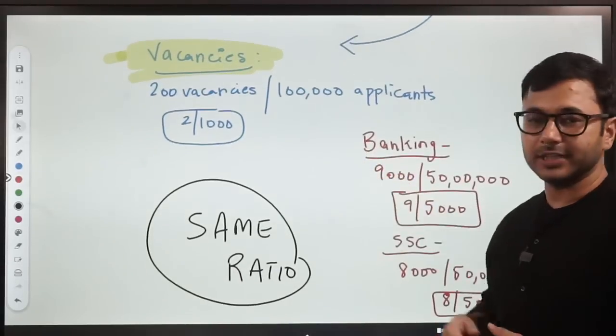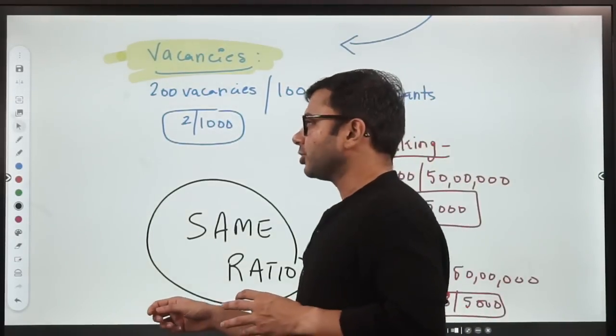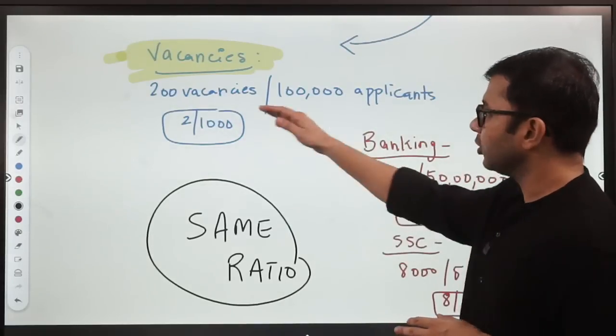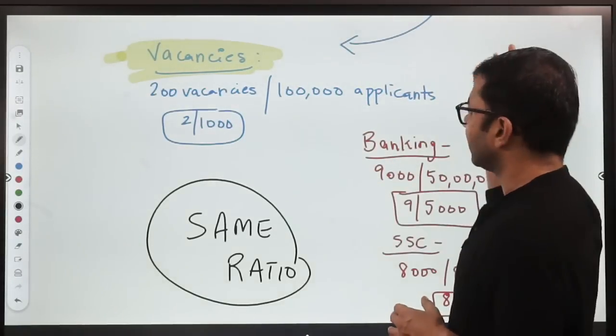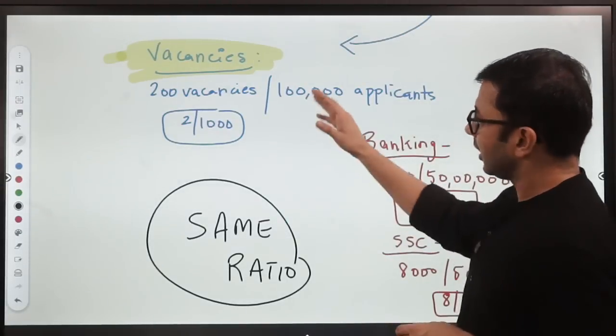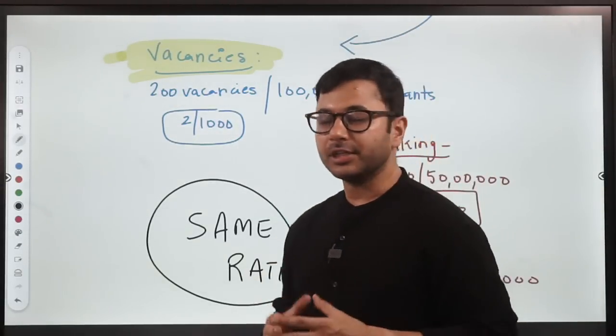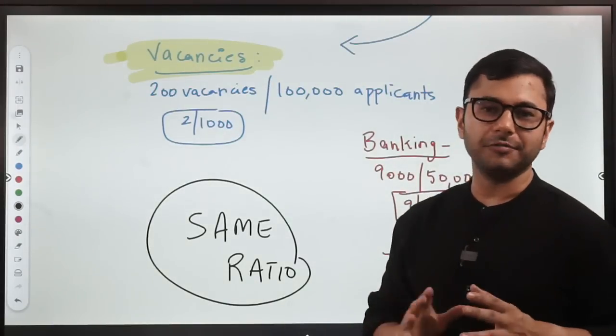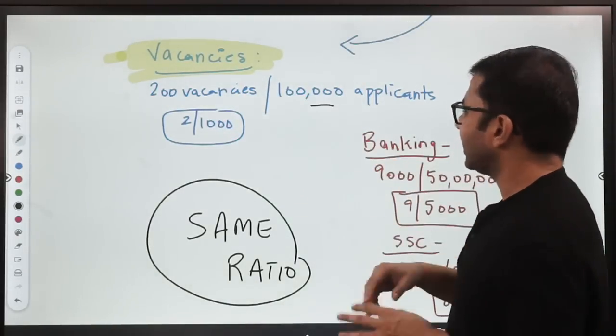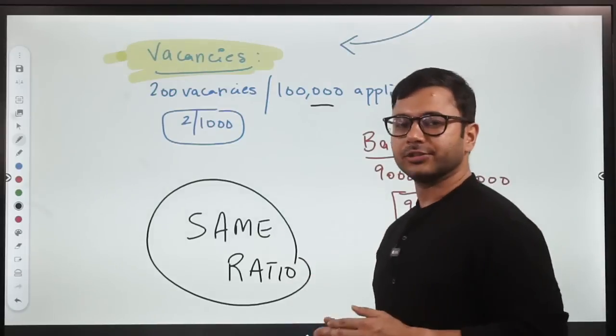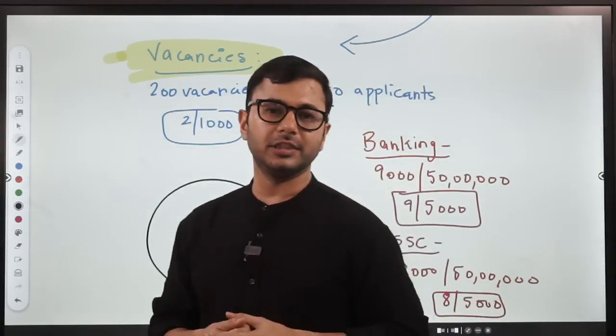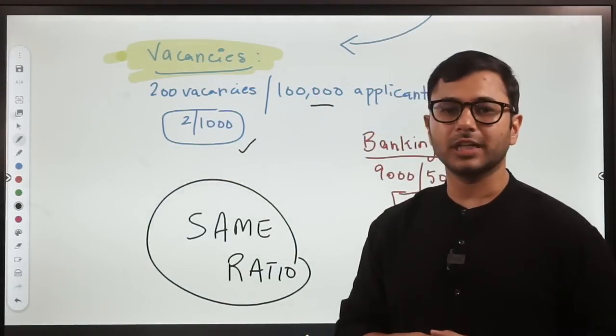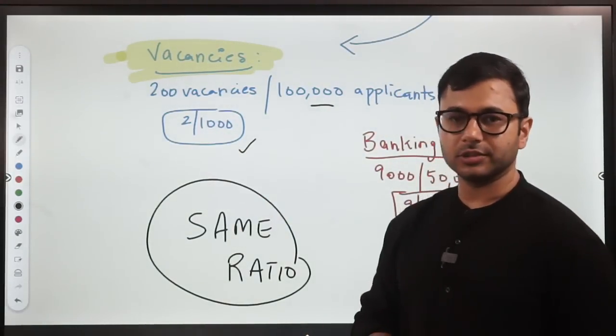First, let's look at vacancies. There is a misconception that vacancies in these exams are very low. Let's have a look at the number of vacancies comparing with number of applicants. If we talk about RBI or SEBI, approximately 200 vacancies are announced every year. Approximately 100,000 applicants or less apply for these examinations. If we look at 1,000 applicants, then there are two vacancies.